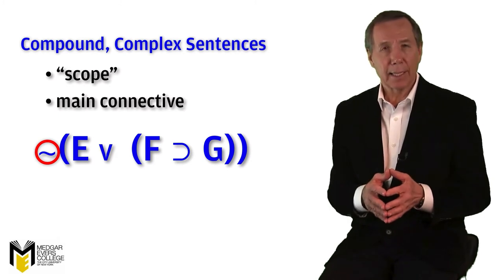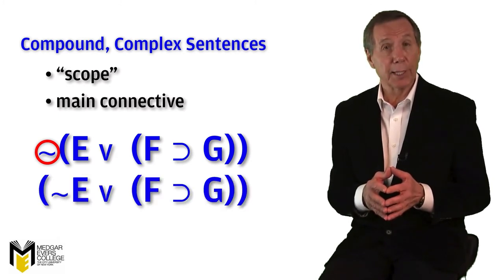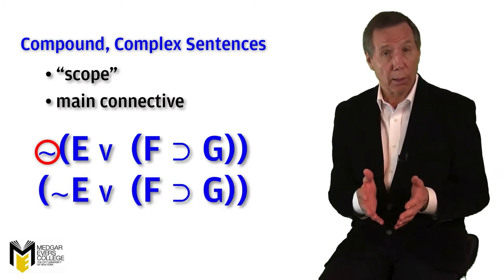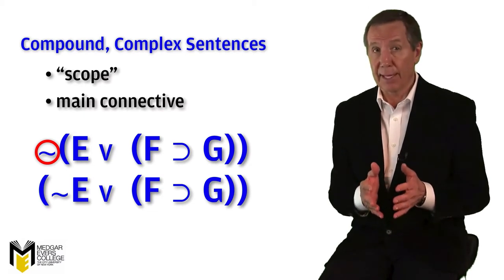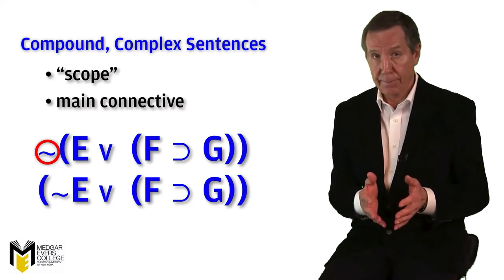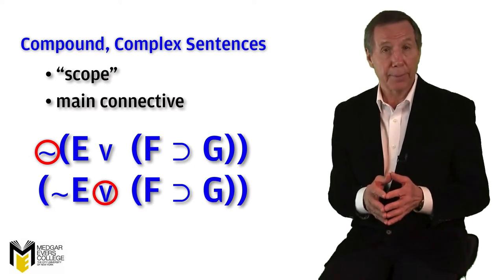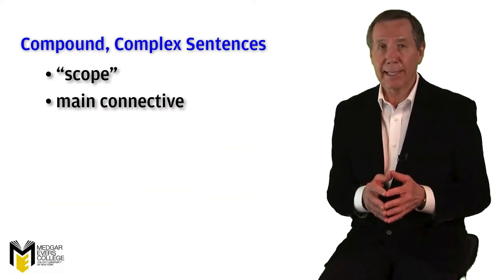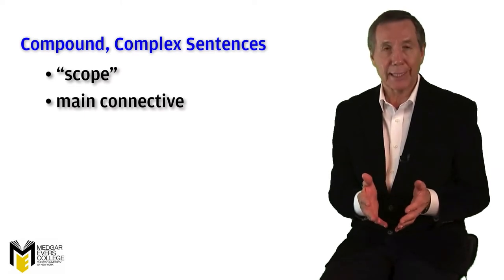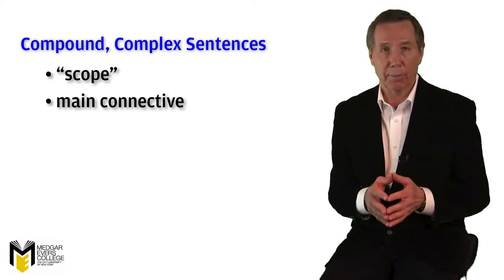The main logical operator of either not E or if F then G is disjunction, the wedge or the V. The main connective of any sentence will have all the rest of the sentence included in its scope.